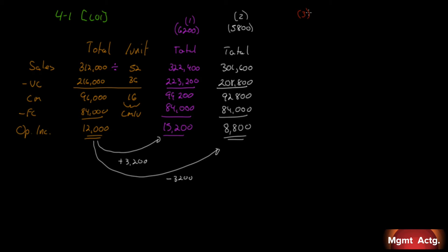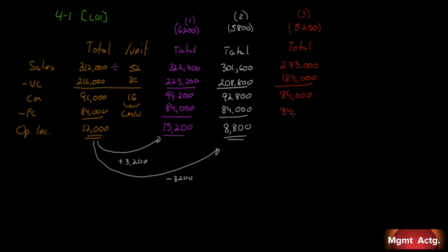Scenario three: the sales volume is 5,250 units. 5,250 times $52 gives us $273,000 in sales. Multiplied by $36 we get variable costs of $189,000, which leaves us with $84,000 in contribution margin. Our fixed costs happen to also be $84,000 — so we make nothing. That's our break-even.